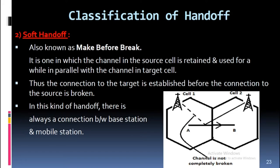Soft Handoff: Also known as 'make before break,' it is one in which the channel in the source cell is retained and used for a while in parallel with the channel in the target cell. Thus the connection to the target is established before the connection to the source is broken. In this kind of handoff, there is always a connection between the base station and the mobile station.